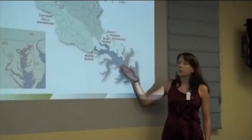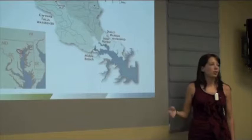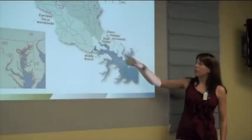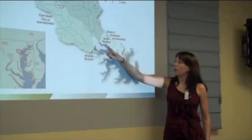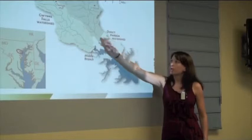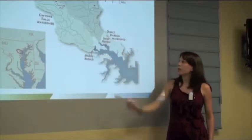We also have the direct harbor watershed, which is the land that drains directly into the tidal portion. Our study sites are the inner harbor, which is this small portion of the tidal Patapsco, and then the middle branch. That's because these watersheds drain directly into those areas.